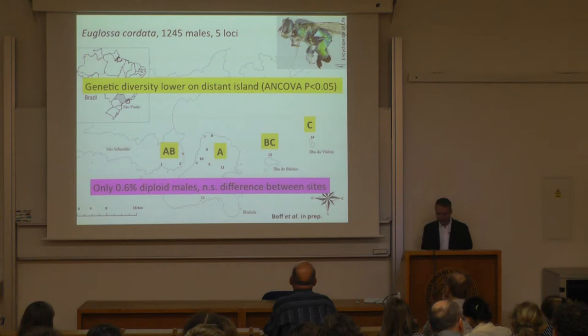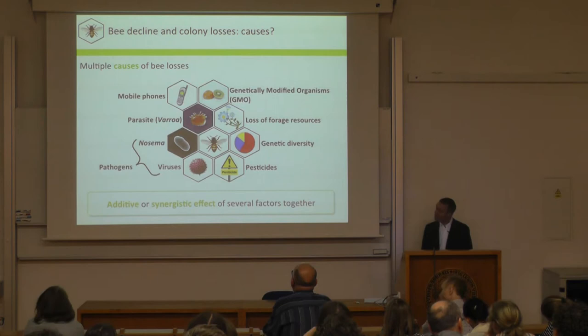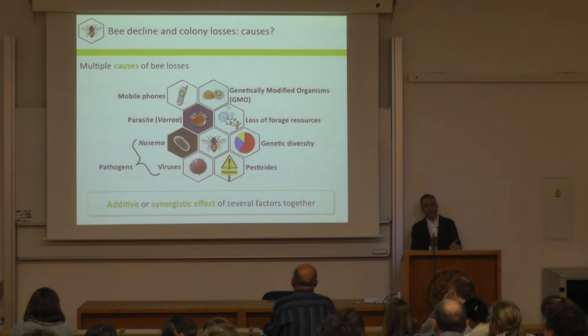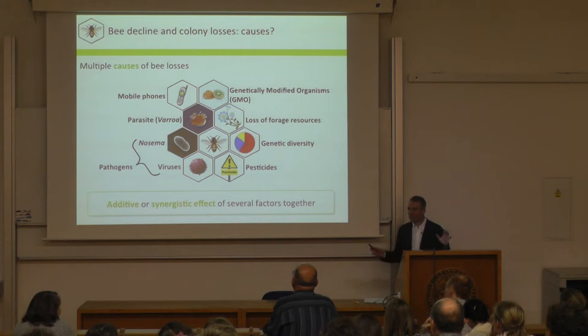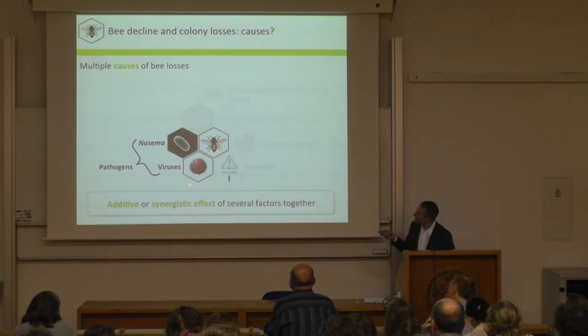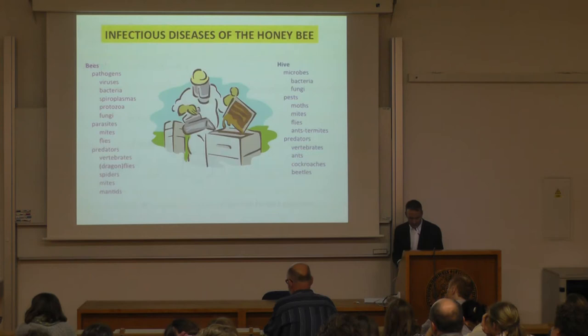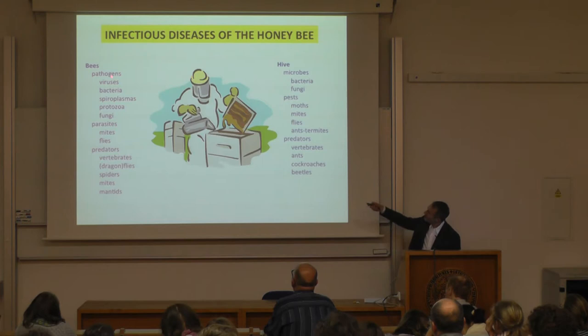That's genetics. Now I'll switch track and look at pathogens and their impact on bees. Here's our range of factors — including mobile phones; I saw the sign saying 'no mobile phones in here', so it must be a safe place for bees. I'm going to look at pathogens, taking just a couple in particular, starting with the honeybee.